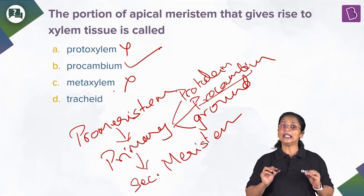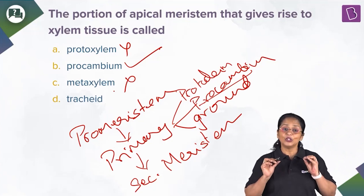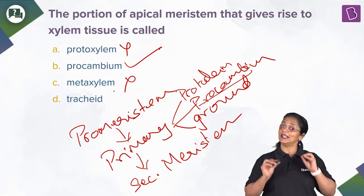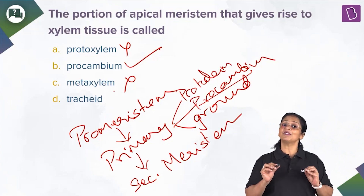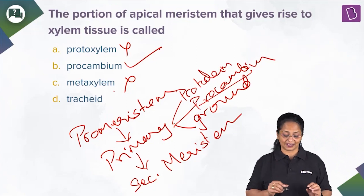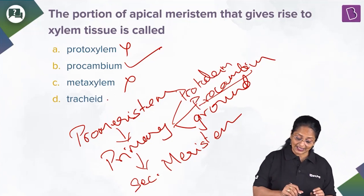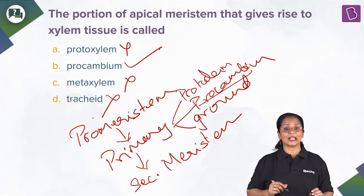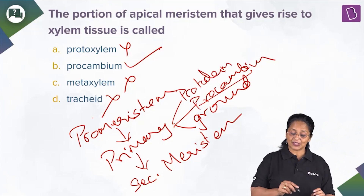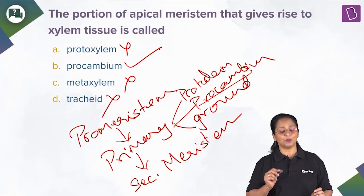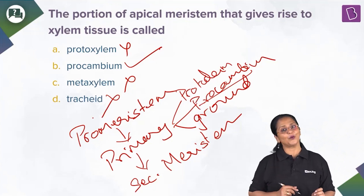Tracheids are units — in fact, xylem is a complex tissue made up of cells such as tracheids, trachea, xylem fibers, and xylem parenchyma. So tracheids are a component of xylem, not the meristem that gives rise to it — this is the wrong option. So the right answer: xylem is formed by the procambium.